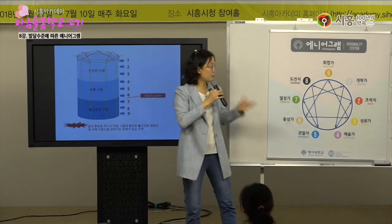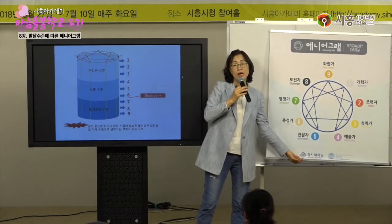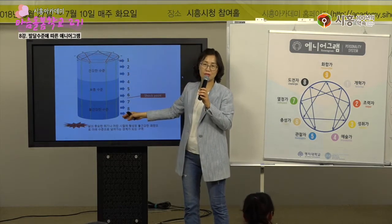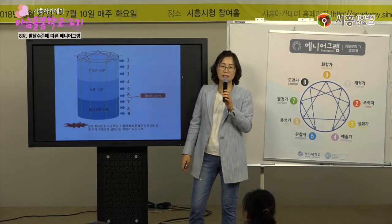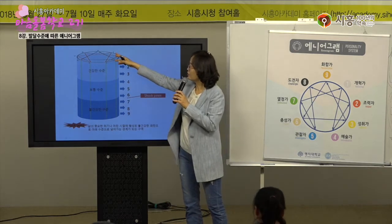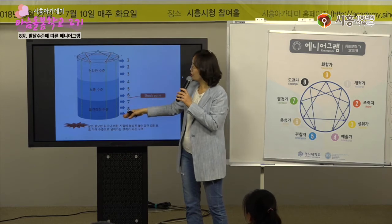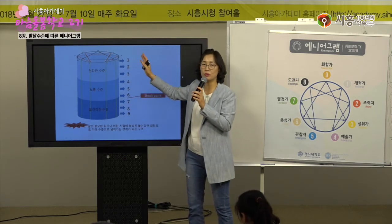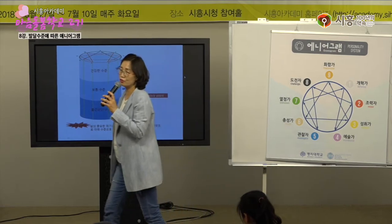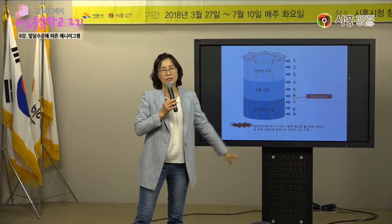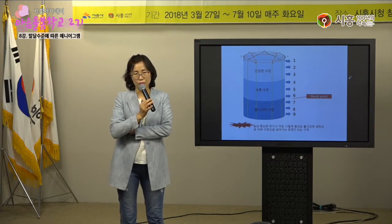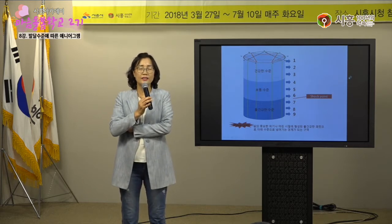평면적으로 사람이 9가지 유형으로 나누어진다고 생각한다면 각 유형들이 1수준서부터 9수준으로 나누어질 수 있다는 말이에요. 1서부터 3수준을 보통 건강한 수준, 4부터 6을 보통 수준, 7부터 9까지를 불건강한 수준으로 나누고 있습니다. 오늘 끝나면 다음 시간서부터 각 유형들은 각각 3가지의 본능을 써요. 1대1 본능, 사회적 본능, 자기보존 본능 이렇게 쓰는데 이제 조금 머리가 아프실 거예요.